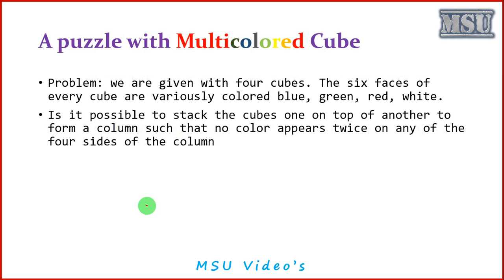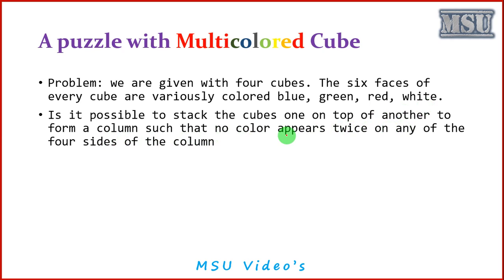We will discuss an example by constructing a graph to solve a problem. The problem is: you are given four colored cubes. The six faces of every cube are variously colored with blue, green, red, and white. Is it possible to stack the cubes on top of one another in a column such that no color appears twice on any of the four sides of the column?